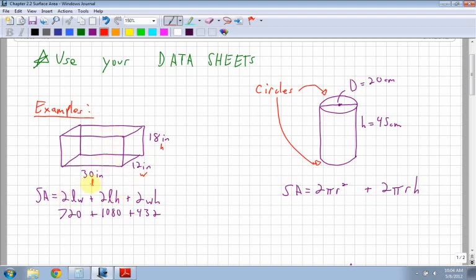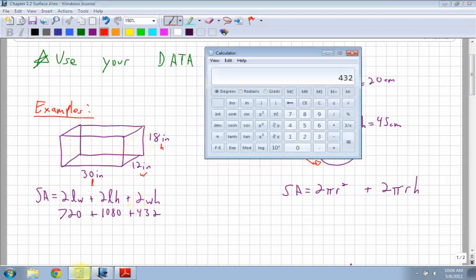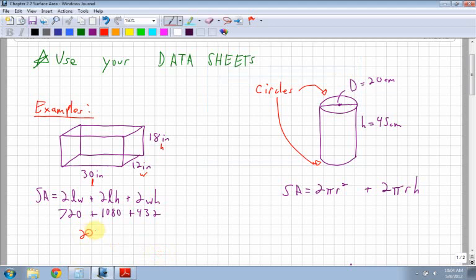2 length times width, length times width is like the bottom, but there's also a top, so that's why I multiply by 2. Length times height is the front face, but there's also a back face, so I multiply by 2. And finally, 2 width times height is the ends, the two sides, which are there's two of them again. Once I have all my values, I add them all together, so I got 432 plus 1,080 plus 720, which gets me 2,232. What are the units of this? They are inches. I'm looking at area, so it's squared.